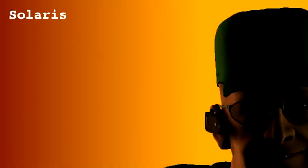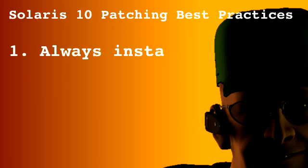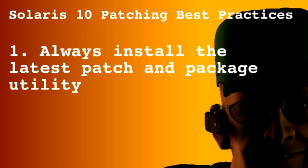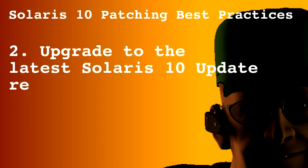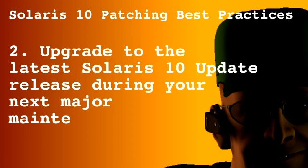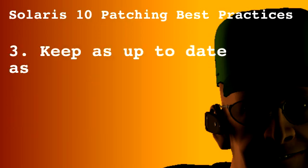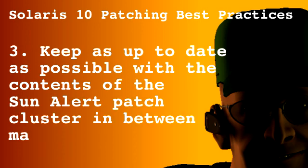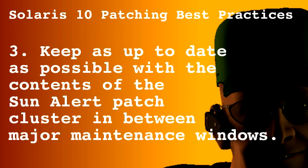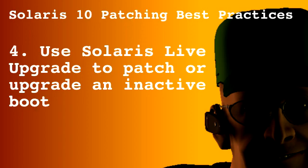So there you have it — the Solaris 10 patching best practices. First, always install the latest patch and package utility patches first. Second, upgrade to the latest Solaris 10 update release during your next major maintenance window. Third, keep as up to date as possible with the contents of the Sun Alert Patch Cluster in between major maintenance windows. Fourth, use Solaris Live Upgrade to patch or upgrade an inactive boot environment.